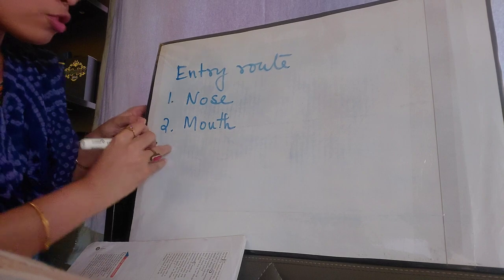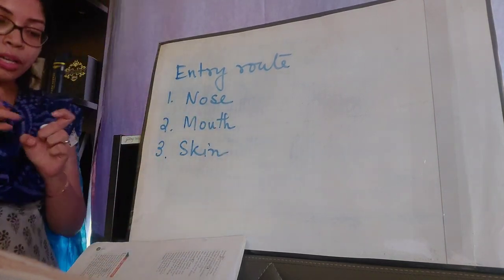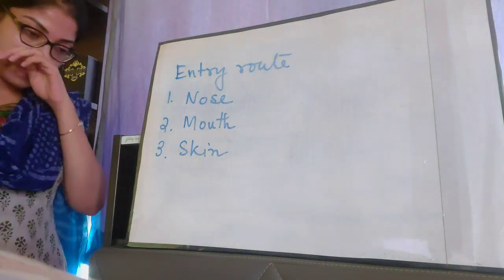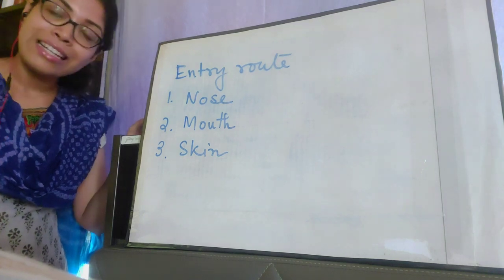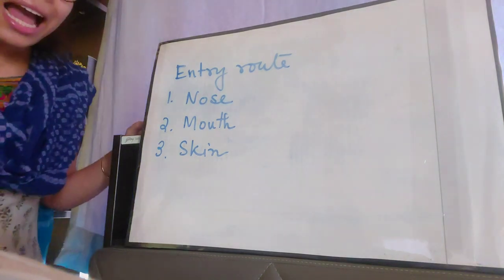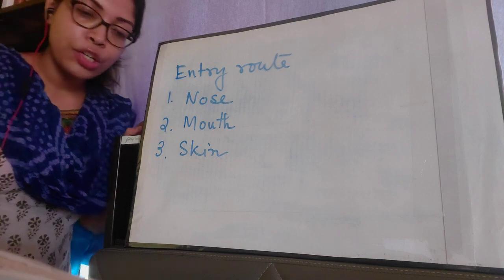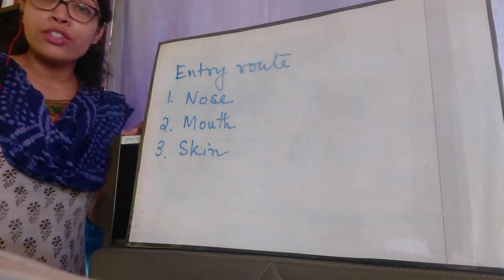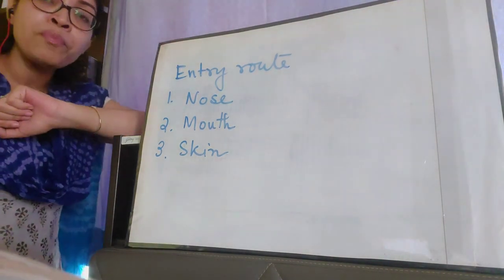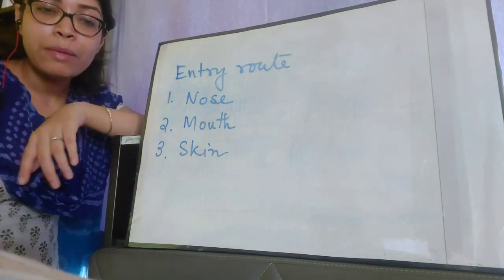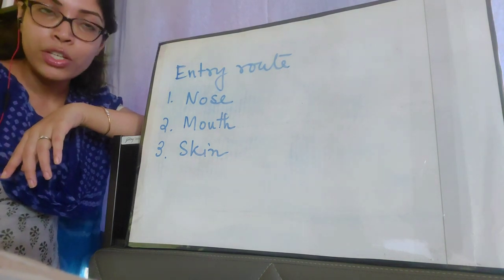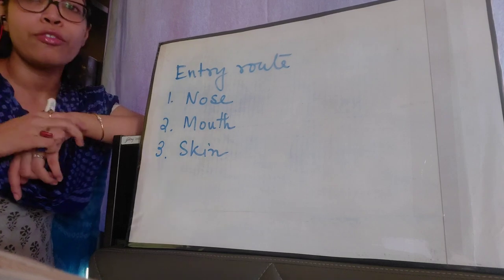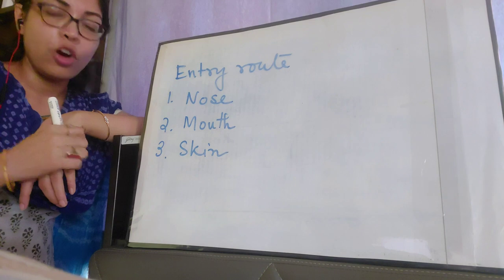Number three is through the skin. Allergic reactions can occur due to insect bites and stings — from wasps and bees, for example. Allergies are also caused when our skin comes in contact with certain metals, cosmetics, or strong sunlight. Some people are totally intolerant of strong sunlight, which can cause rashes and other allergic reactions. So these are the possible entry routes of different types of allergens into a person's body.